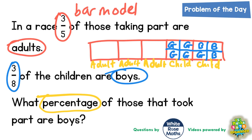Now it is asking us what percentage of those that took part are boys. What we should do first is make all parts of the whole bar look the same. So each adult square gets split into four as well. Now the whole bar has a lot more than the five original sections — in each of the five original sections there are now four pieces, so altogether there are 20 sections.